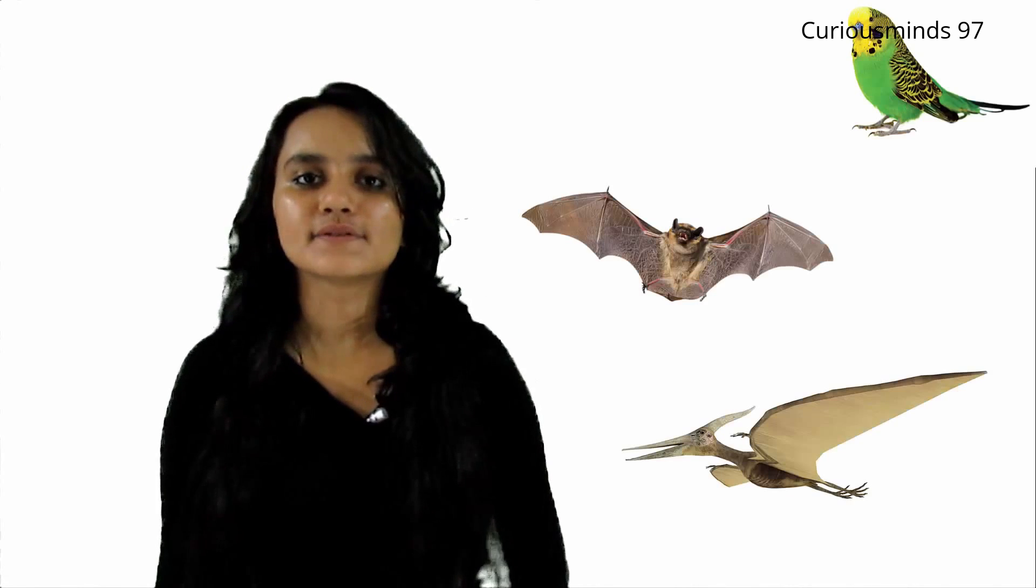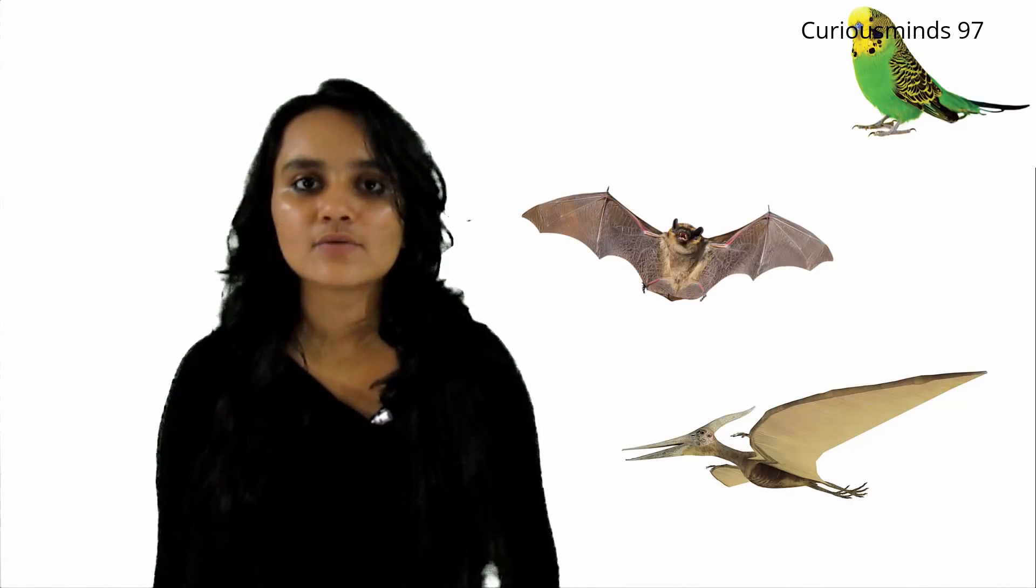The power required to flap the wings enough to raise the body is the major roadblock in giving the humans wings. Birds, bats and pterosaurs have large pectoral muscles which make about 30 to 35 percent of their total body mass which powers their wings.